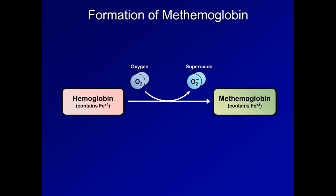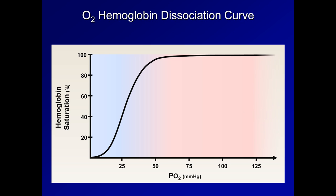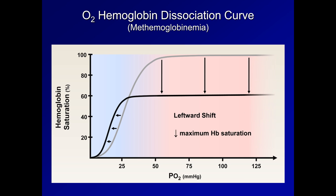So why exactly is methemoglobinemia bad? Because it does two things. First, it shifts the oxygen hemoglobin dissociation curve to the left. Second, it causes a decrease in maximum hemoglobin saturation because hemoglobin subunits containing heme groups with a plus 3 iron cannot bind to oxygen. So in the presence of methemoglobinemia, blood can carry less oxygen hemoglobin and is less able to release it in peripheral tissues.